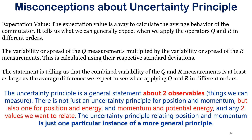The uncertainty principle is a general statement about two observables — it has nothing to do specifically with position and momentum. That is another misconception. There is not just an uncertainty principle for position and momentum, but also one for position and energy, or momentum and potential energy — any two values we want to relate. The uncertainty principle relating position and momentum is just one particular instance of a more general principle involving operators Q and R applied in different orders.